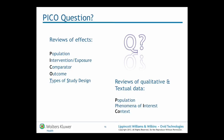This same PICO mnemonic can also be used to guide moving from a question into eligibility criteria and asking that question in an answerable format for reviews of qualitative and textual data. Here we're referring to a population, but we talk about a phenomena of interest rather than an intervention and comparator. This might be a question looking into the meaningfulness or how a patient experiences a particular therapy. We also talk about the context rather than specifying particular outcomes.